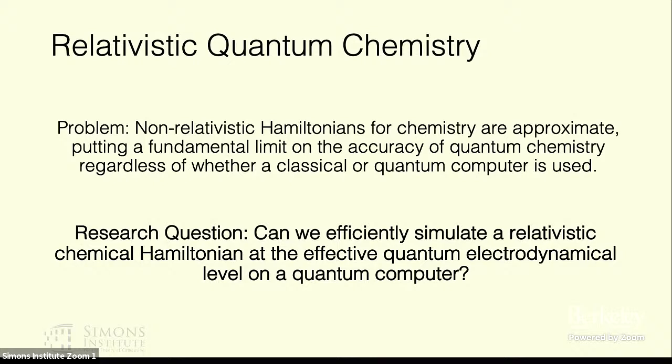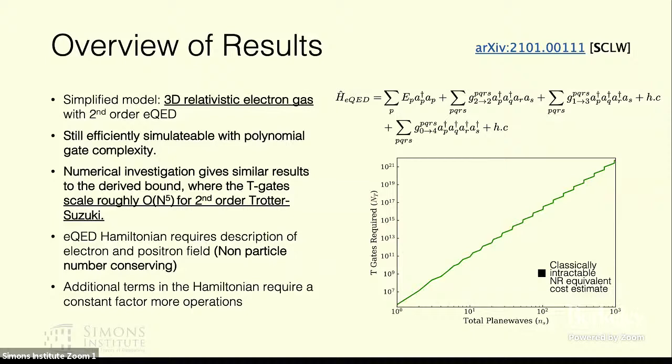So one research question we had is can we efficiently simulate a relativistic chemical Hamiltonian at the level of effective QED on a quantum computer? And the very short answer is yes you can and it's efficiently simulatable in polynomial time with polynomial gate complexity. Essentially the difference in this Hamiltonian is that you have non-particle number conserving terms and you only care about conserving charge. So essentially you add in not only a field of electrons but a field of positrons as well and you have to appropriately deal with that, but your Hamiltonian is still in a form where you can get this efficient calculation on a quantum computer.